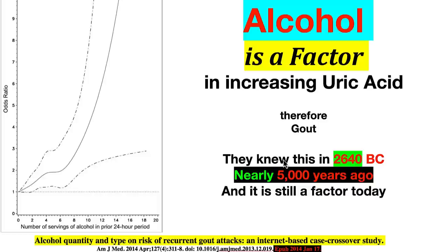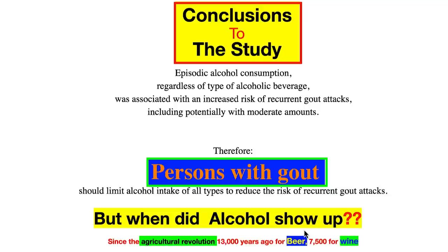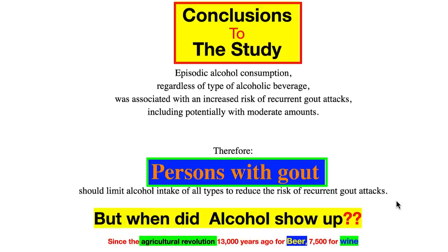That's still a factor today. It may not be your factor; it might not be mine — though it's part of my factor. One study concluded that episodic alcohol consumption, regardless of the type of beverage, was associated with an increased risk of recurrent gout attacks, even with moderate amounts. Therefore, persons with gout should limit alcohol intake of all types. Alcohol has been around for thousands of years and so have documented cases of gout — 13,000 years ago for beer, 7,500 years ago for wine.